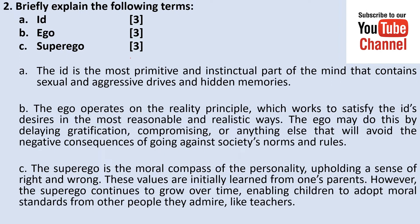The ego operates on the reality principle, which works to satisfy its desires in the most reasonable and realistic ways. The ego may do so by delaying gratification, compromising, or anything else that will avoid negative consequences. The superego is the moral compass of personality, upholding a sense of right and wrong. These values are initially learned from one's parents; however, the superego continues to grow over time, enabling children to adopt moral standards from teachers and close associates.